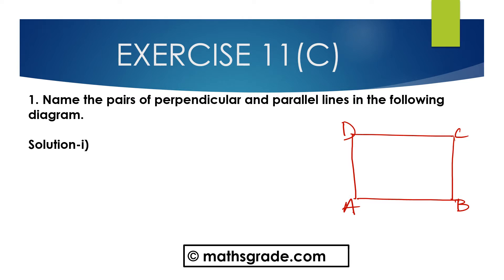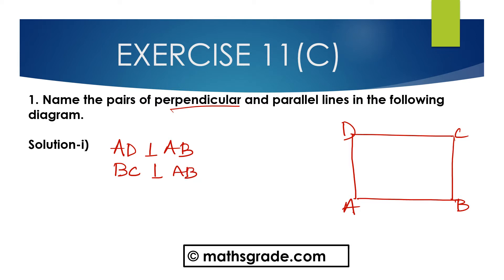So the pairs of perpendicular lines: AD is perpendicular to AB, and BC is perpendicular to AB.